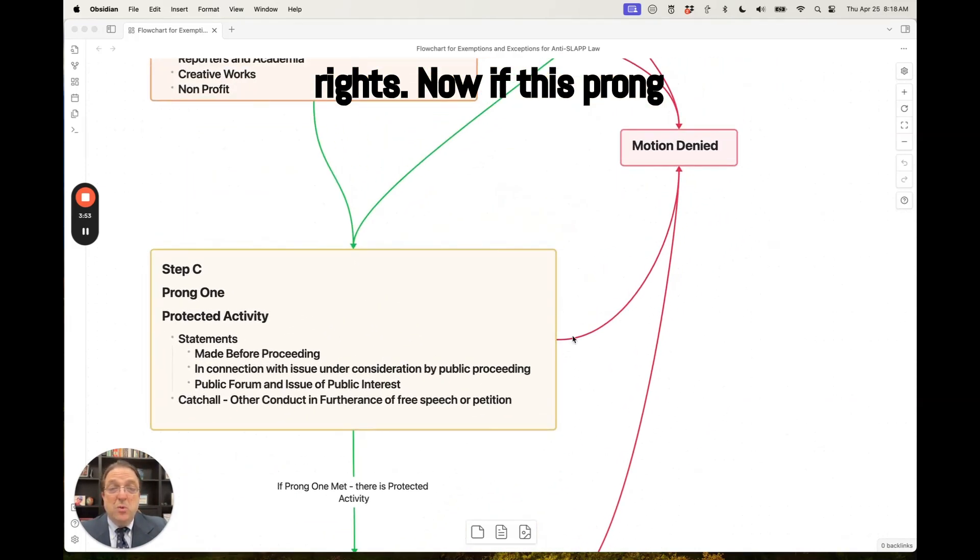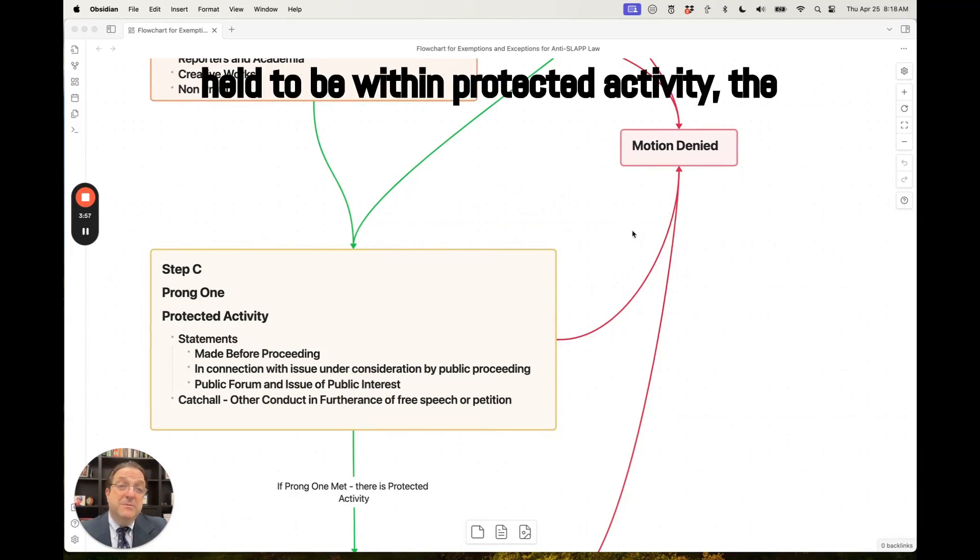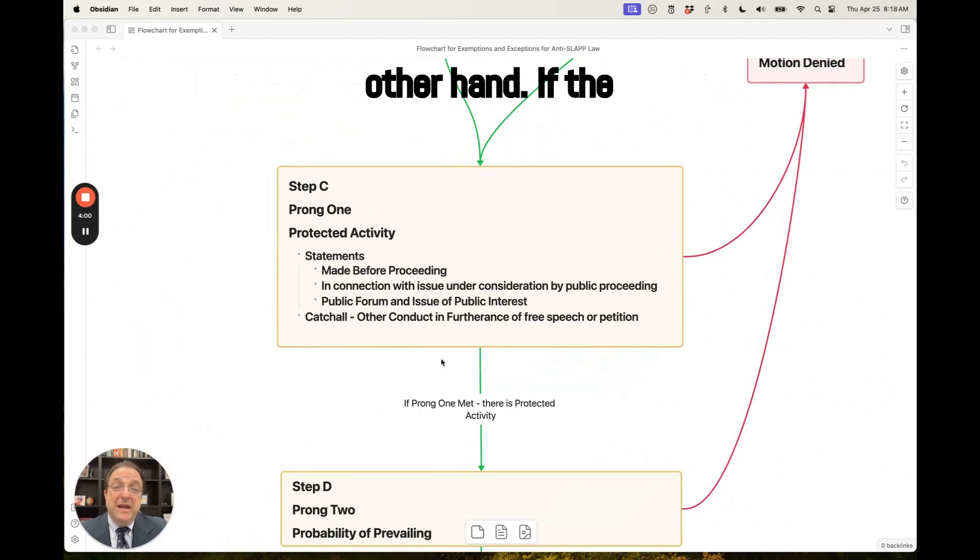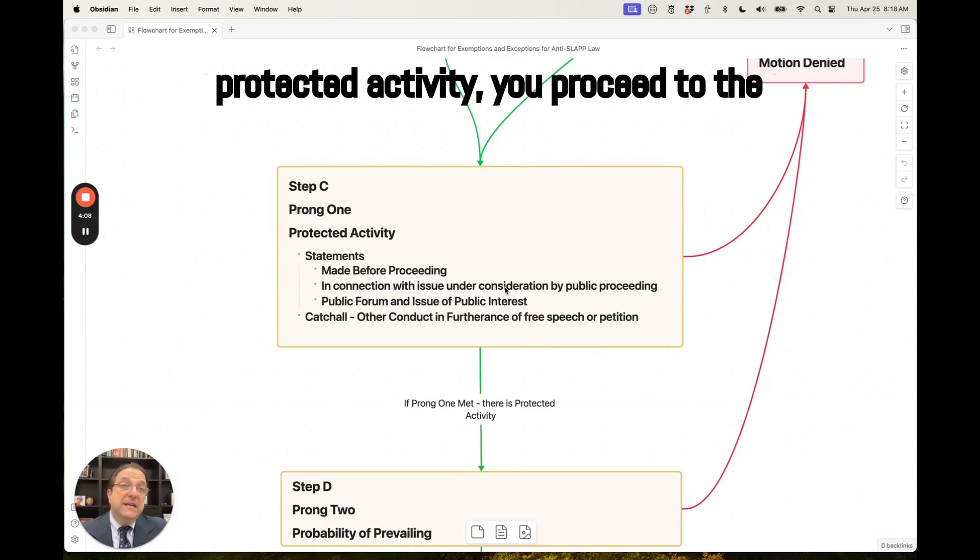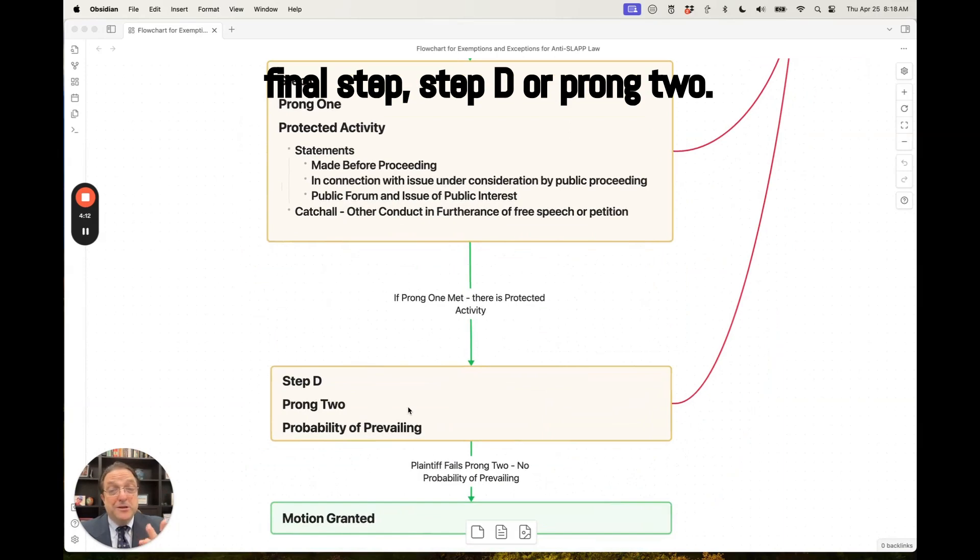Now, if this prong one is not met, meaning the claim is not held to be within protected activity, the anti-SLAPP motion shall be denied. On the other hand, if the defendant satisfies its burden under prong one to prove the claims arise from protected activity, you proceed to the final step, step D or prong two.